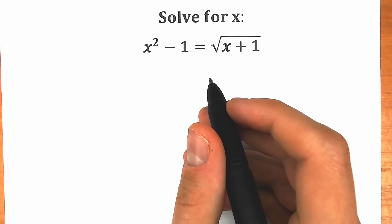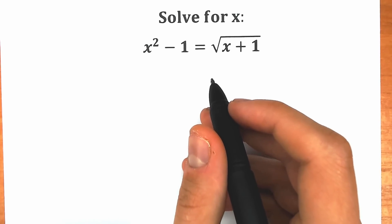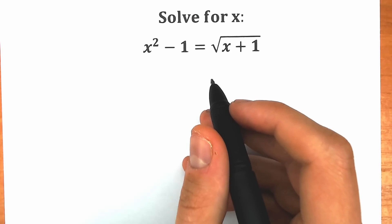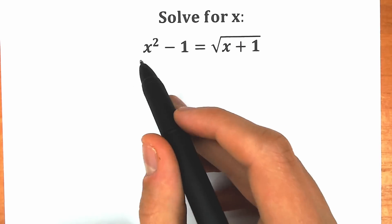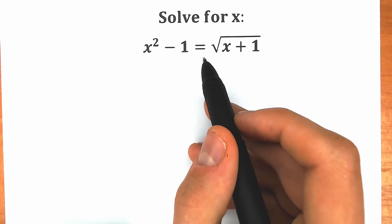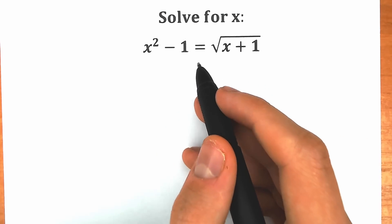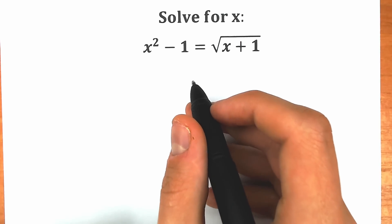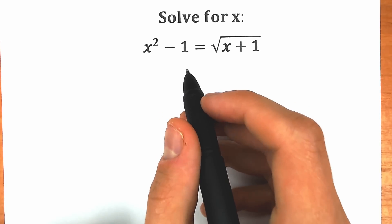Hello everyone, welcome back to my channel. I'm Asimatics. Today we have a very tricky algebra question from sixth grade. A lot of students might say this is an easy question — we can just square both sides and find x. But this is actually a very tricky question and a lot of students make a common mistake. Let's try to solve it completely and step by step.